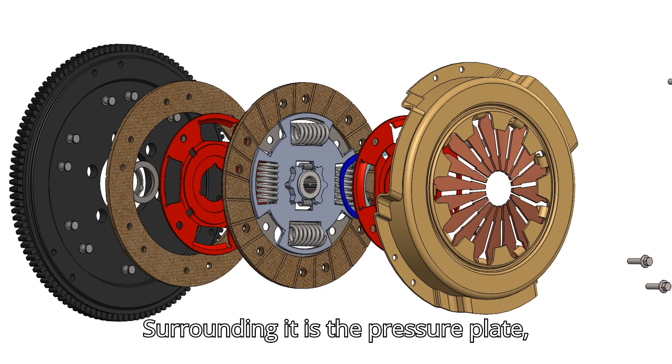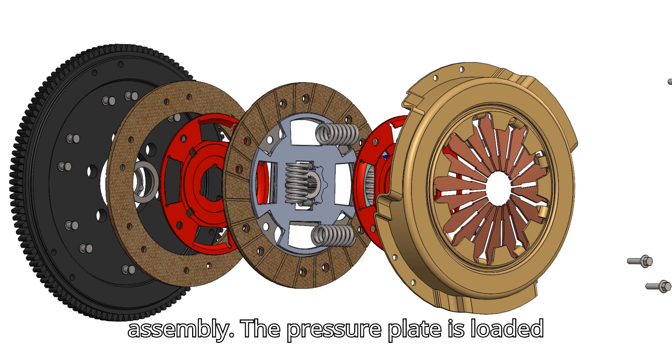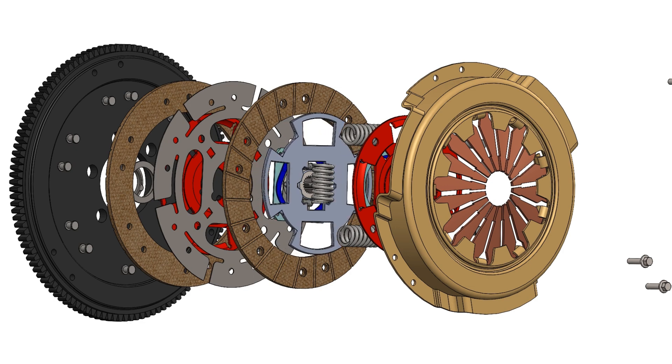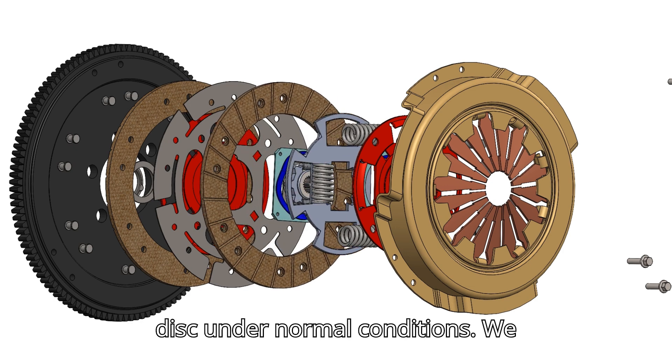Surrounding it is the pressure plate, held in place by the clutch cover assembly. The pressure plate is loaded with coil springs or diaphragm springs, which maintain contact with the clutch disc under normal conditions.